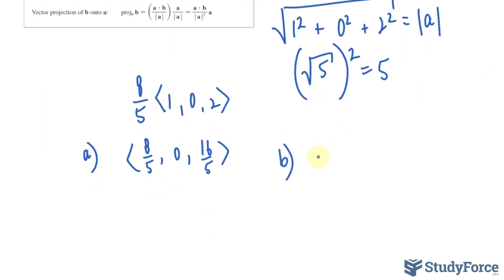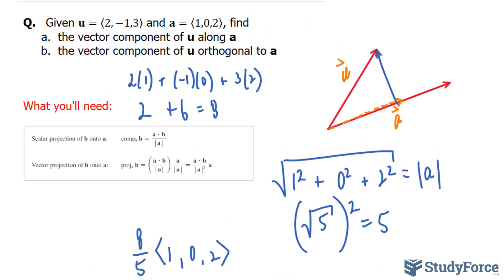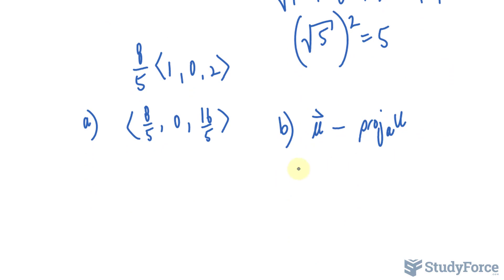So for b, we'll take vector u minus the projection of u along a. Vector u, once again, is 2, negative 1, and 3. Minus what we just found, 8 over 5, 0, and 16 over 5.